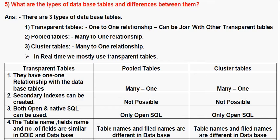The transparent table has a one-to-one relationship with the database table, while pool and cluster tables have a many-to-one relationship. A secondary index can be created in a transparent table, but in the case of the pool table, a secondary index is not possible.